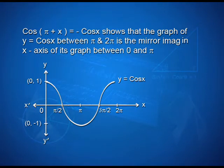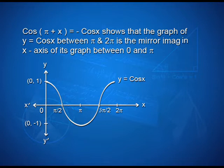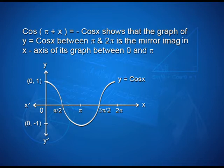Here we have the x-axis x'Ox and y-axis yOy'. We can observe that the starting point is (0, 1) and it is a decreasing function, coming down to pi by 2 and completing its graph up to pi. The section from pi to 2 pi is the mirror image of the previous graph. This is how y = cos x can be plotted.